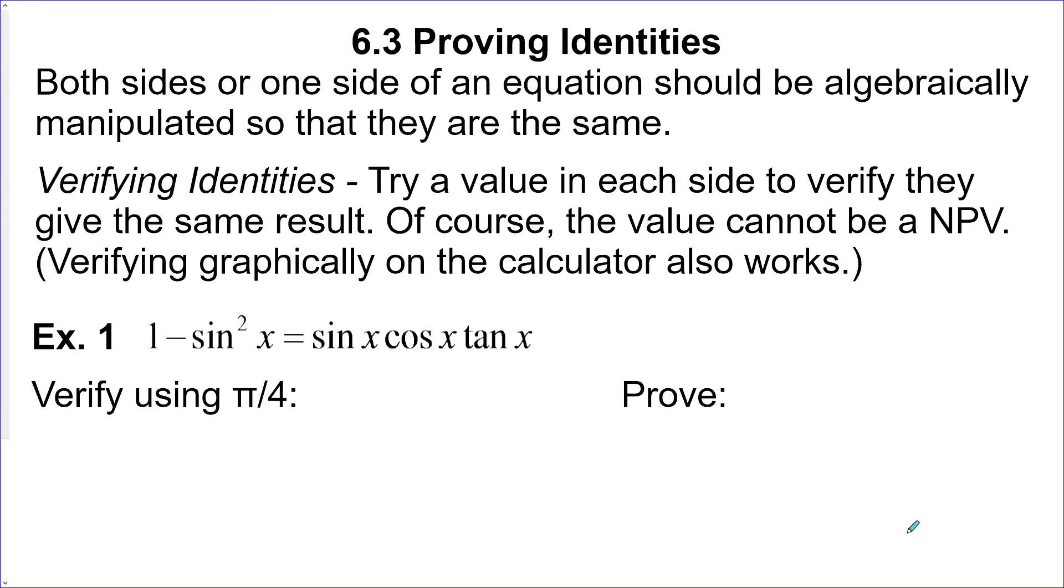6.3 Proving Identities. When we prove an identity, we want to manipulate both sides or just one side of an equation to make it look the same algebraically. No crossing over is allowed. We have to do it algebraically because there's no other way we can prove it. We need to get to a state where the left side equals the right side.